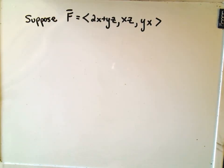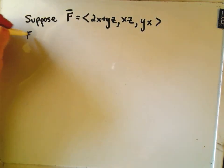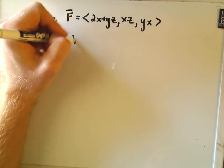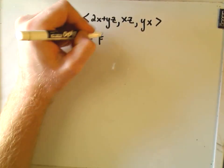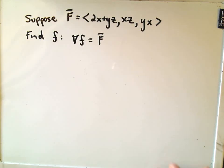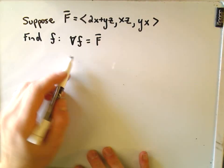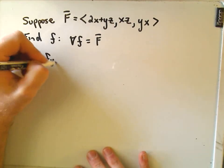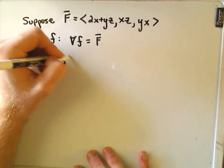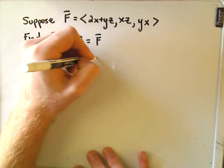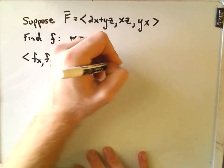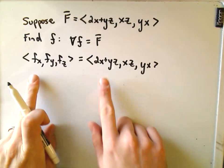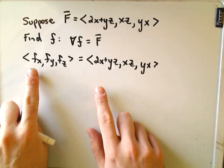Assuming a potential exists, let's find it. We're going to find a function little f so that when we take the gradient of little f, we get capital F back — our vector field. Recalling that the gradient of f is just the partial with respect to x, the partial with respect to y, the partial with respect to z — that's going to have to equal our vector field. We just set respective components equal to each other.